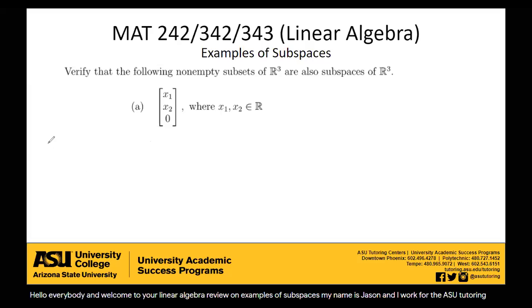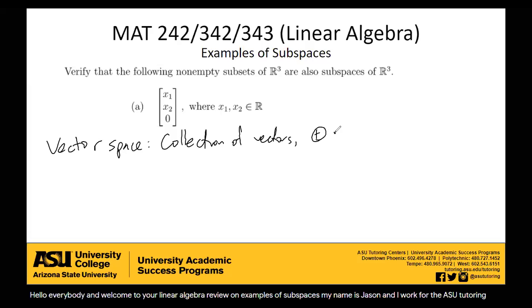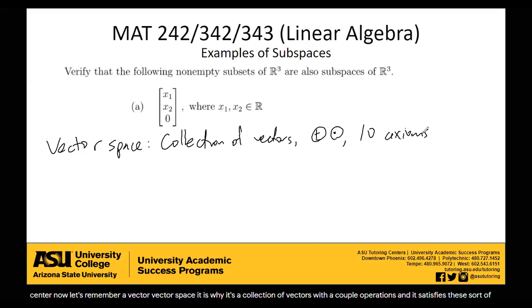Now, let's remember, a vector space — it is what? It's a collection of vectors with a couple operations. And it satisfies these sort of like 10 axioms of being a vector space. So you need all of these conditions to be considered a vector space. Now, a subspace is pretty much just a smaller piece of your vector space.